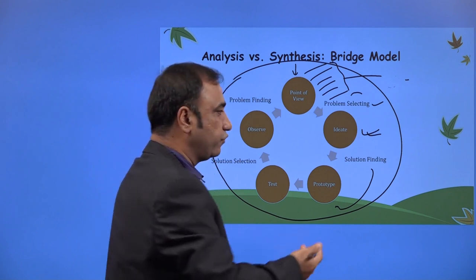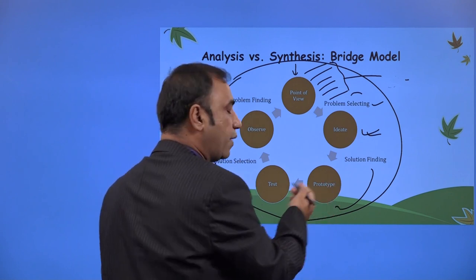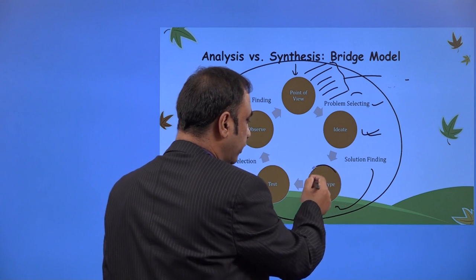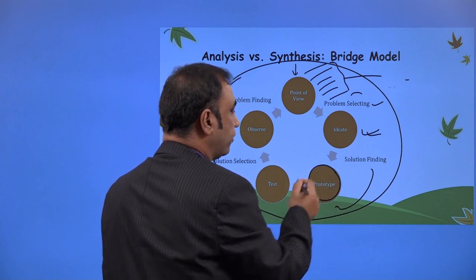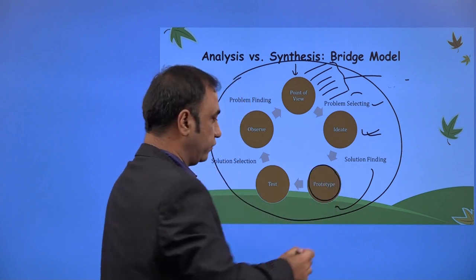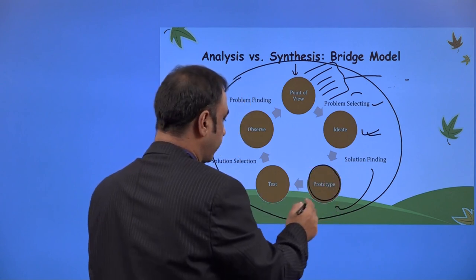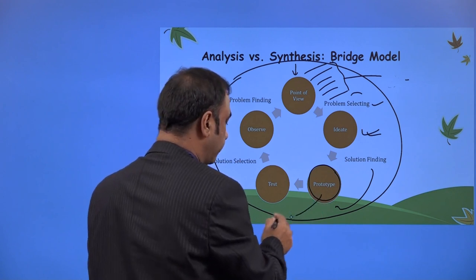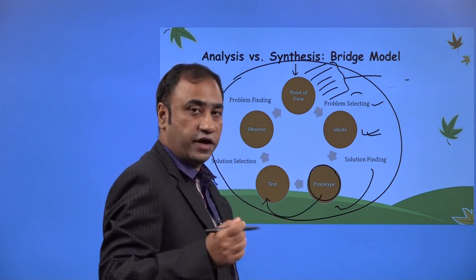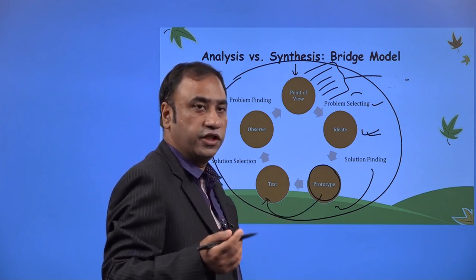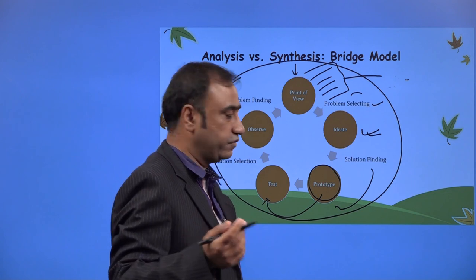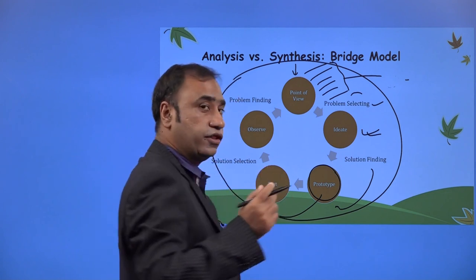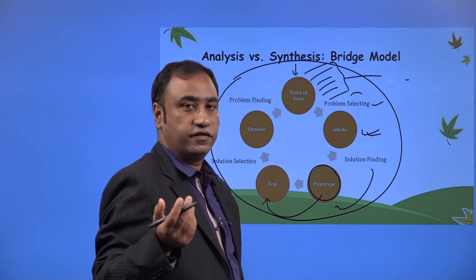How do we create a solution? First, we create a prototype. This is the first step in moving from your problem to the solution. Once you have created the prototype, you go and test the prototype of that particular product in the market or among your users. Record the outcome of your testing.